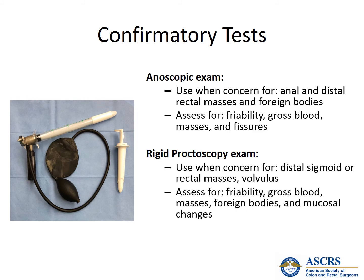The rigid proctoscope, on the other hand, bypasses the anal canal with proper insertion and is useful for evaluation of the rectum and distal sigmoid colon. It should be used when there is concern for distal sigmoid and rectal pathology. You should assess for mucosal friability, gross blood, masses, and mucosal changes.